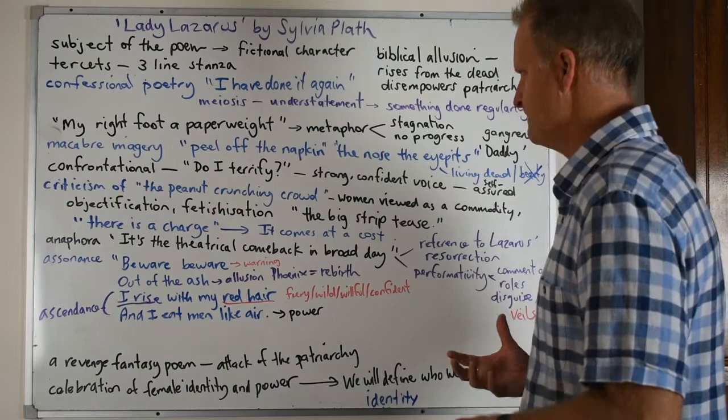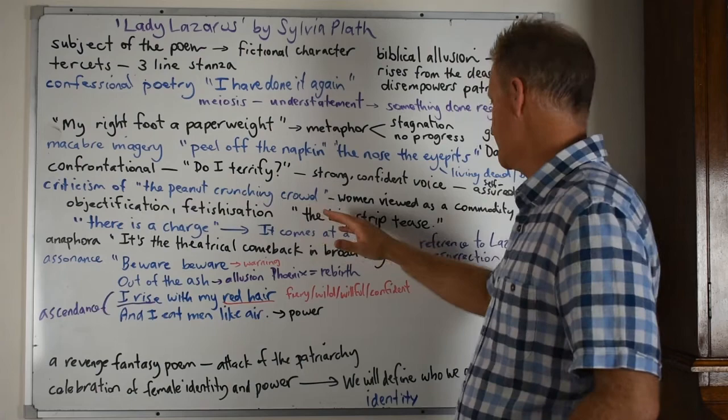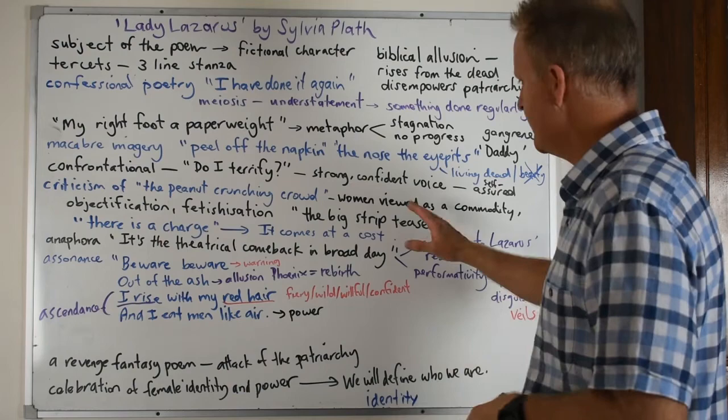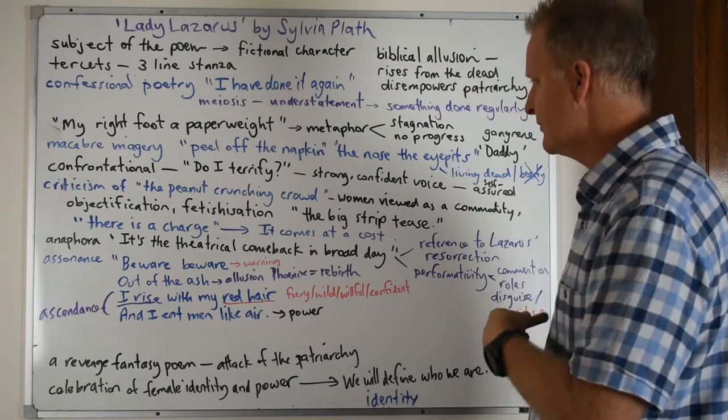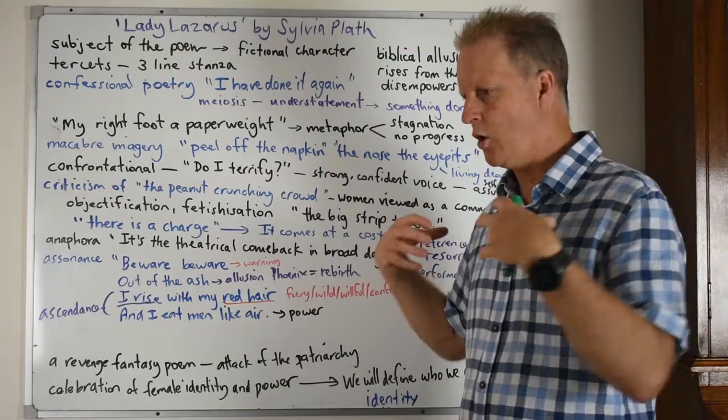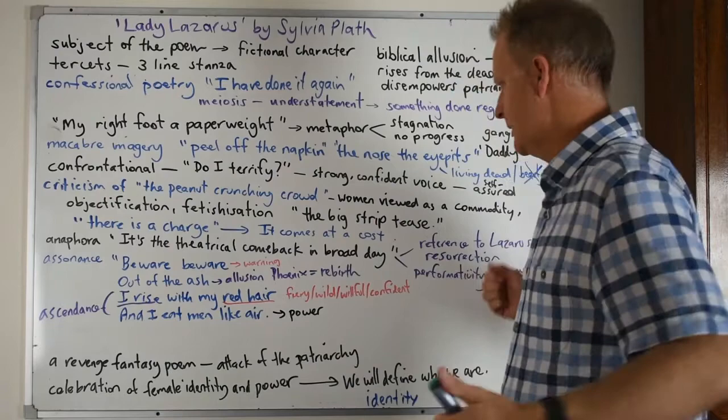Plath criticizes the peanut-crunching crowd and does this in a number of her poems. And here she's presenting this notion that women are viewed as a commodity, that they're objectified and there is a sense of fetishization, that this whole process of removing the bandages and stripping Lady Lazarus bare is like the big strip, and that's what a great line that is.